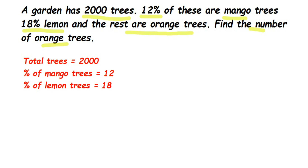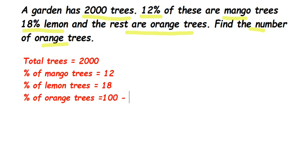We know that total percentage is 100. To find the percentage of orange trees, we subtract the other two. There are three types of trees: mango, lemon, and orange. We've been given 12% mango and 18% lemon, so we remove those two from 100 to get the orange percentage.